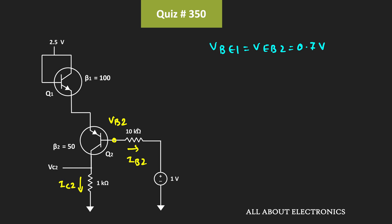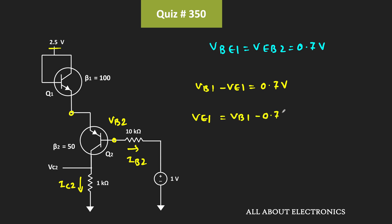So first of all, let us find this voltage VB2. We have been given that VBE1 is equal to 0.7V, so we can write it as VB1 minus VE1 is equal to 0.7V. And here VB1 is equal to 2.5V, that means VE1, the voltage at this node, is equal to VB1 minus 0.7V, which is equal to 2.5V minus 0.7V, that is equal to 1.8V.